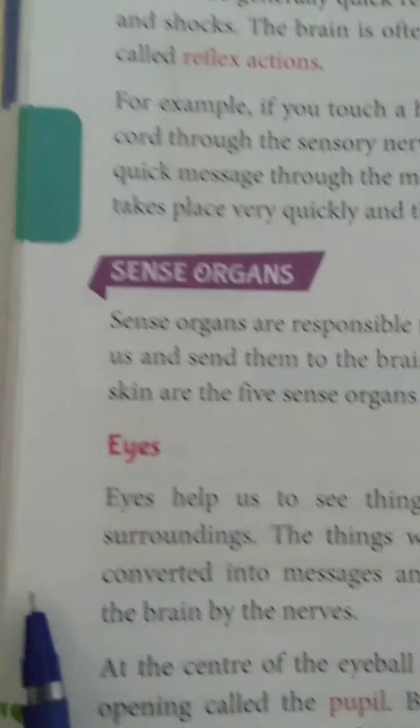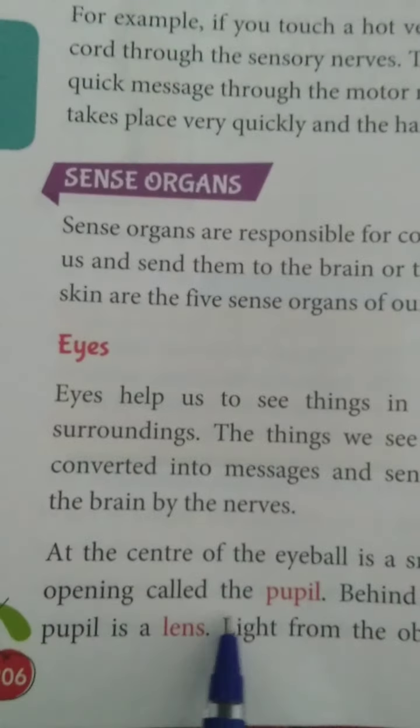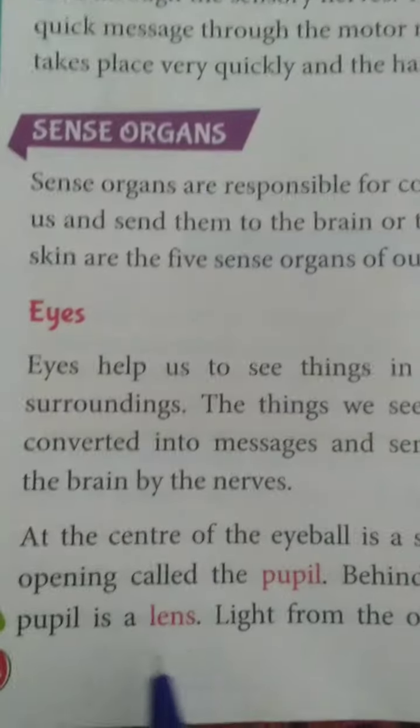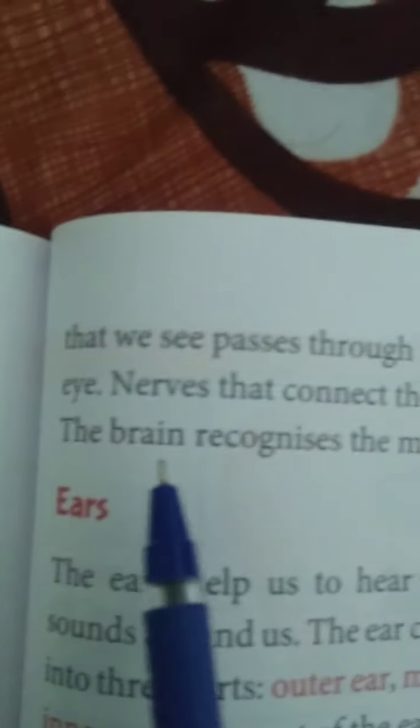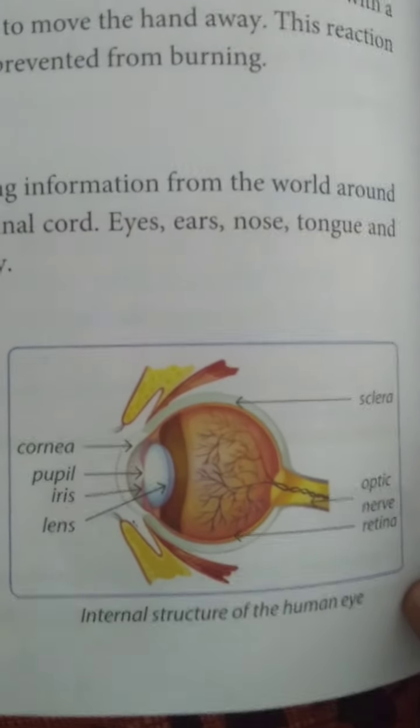Let's discuss about eyes. Eyes help us to see things in our surroundings. The things we see are converted into messages and sent to the brain by the nerves. At the center of the eyeball is a small opening called the pupil, and behind the pupil is a lens. Light from the object passes through the pupil and the lens and forms an image inside the eye. Nerves connecting the eye and the brain carry the messages to the brain. The brain recognizes the message and we see the object. Here you can see the internal structure of the human eye.